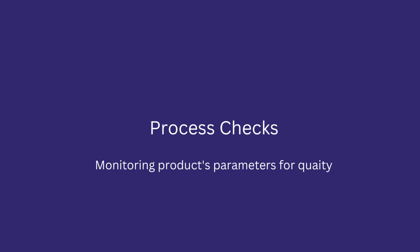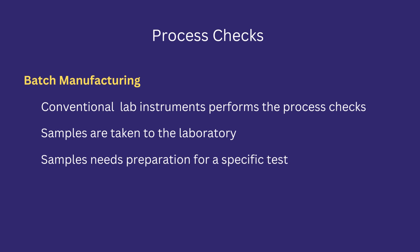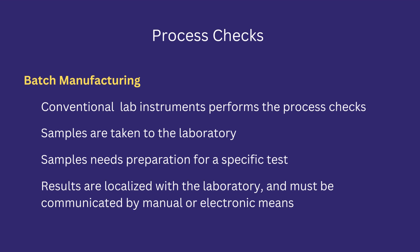Process checks means how the product's parameters are monitored for quality. In batch manufacturing, conventional lab instruments perform the process parameter checks. Samples are taken to the laboratory where they are placed and installed. Before applying samples to these instruments, samples need preparation according to the specific instrument so that the instrument is capable of accurately reading and analyzing. Results are localized within the laboratory and must be communicated by manual or electronic means to the concerned person at the place of process execution.